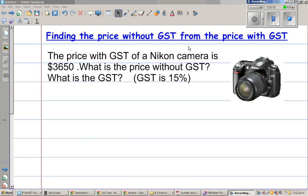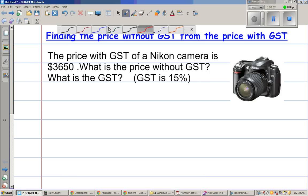Finding the price without GST from the price with GST. Let me take an example. The price with GST of a Nikon camera is $3,650. So this camera costs $3,650, and what they're saying is this price has the GST in it. So you can say this is a price inclusive of GST. The question is what's the price without GST? And after that you want to find what is the GST.